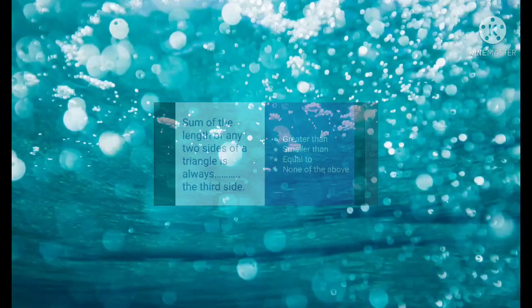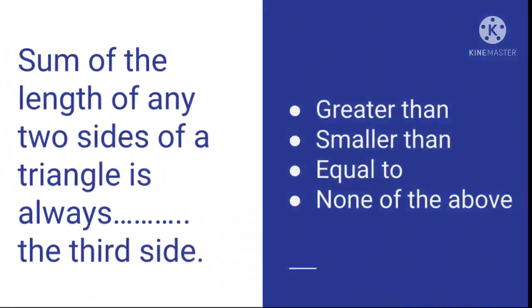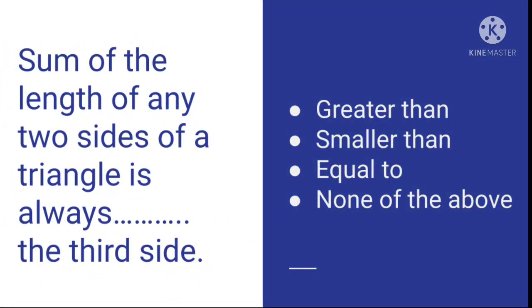Question number 10: The sum of the lengths of any two sides of a triangle is always blank the third side. Your options are: greater than, smaller than, equal to, or none of the above. Try to choose the correct answer.